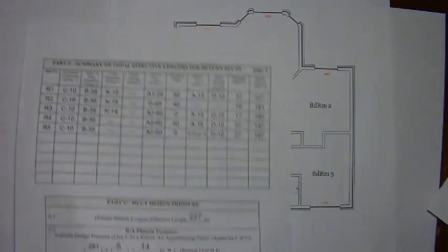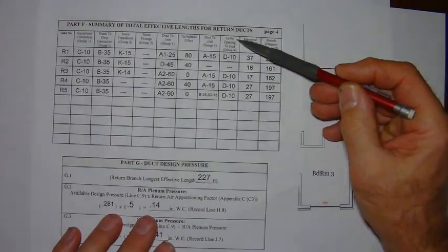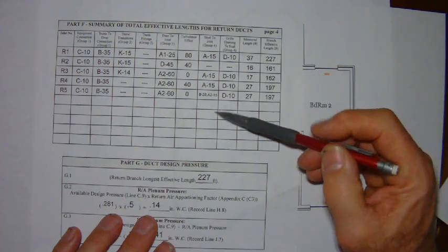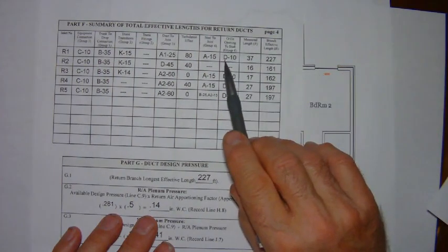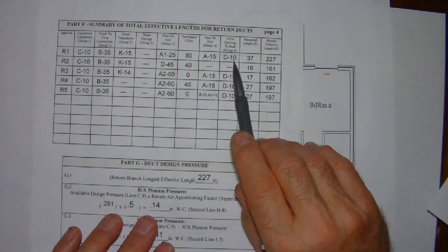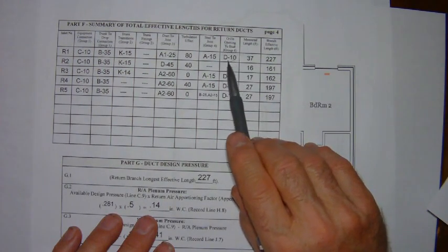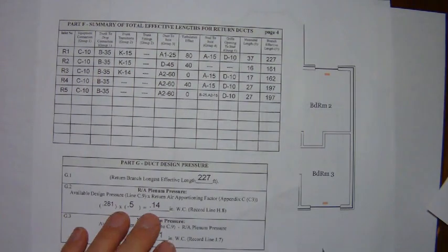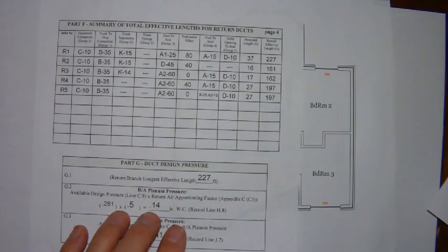So on your worksheet where it's looking for the grill opening to stud, we would have a D and then ten. Ten representing the equivalent length and the D representing the fitting identifier.